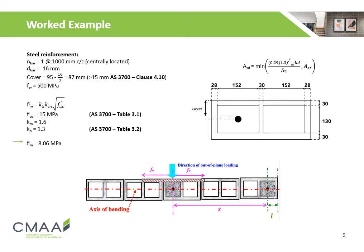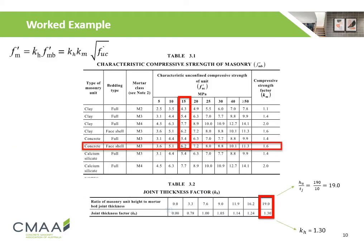We will go through how these values are obtained in the next slide. The characteristic compressive strength of the masonry and the joint thickness factor are determined from tables 3.1 and 3.2 respectively. Using face shell bedding of M3 mortar with standard block units, we are able to determine the characteristic compressive strength of the masonry.